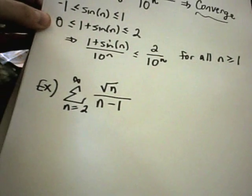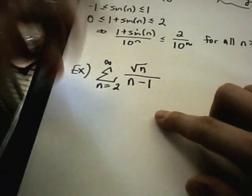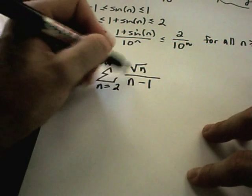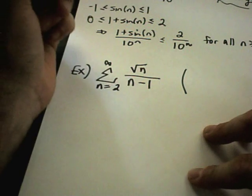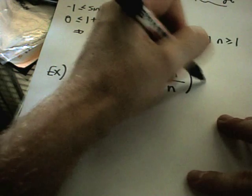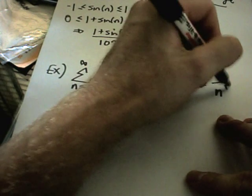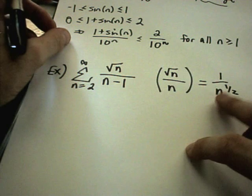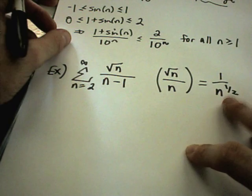For my next example, I'm going to use the series from n equals 2 to infinity of square root of n over n. The thing I'm going to compare this to: I take the highest power on top and the highest power on the bottom. This is n to the 1/2 over n to the first, which is equivalent to 1 over n to the 1/2.